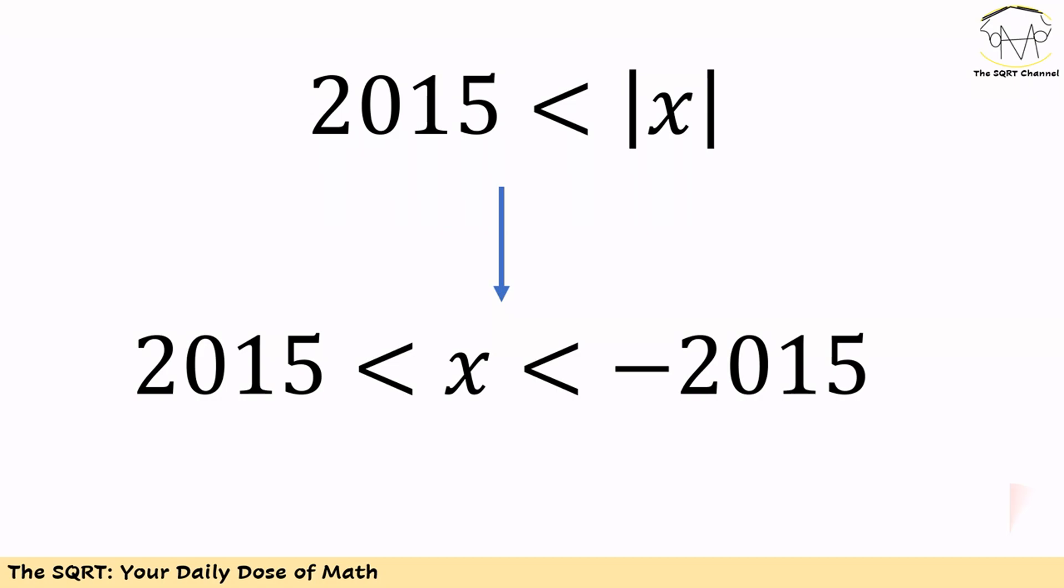The second part is similar to the first part. |x| is greater than 2015. We can write it as x is greater than 2015 and less than -2015.